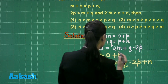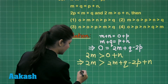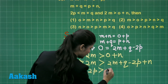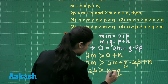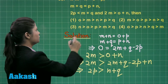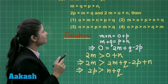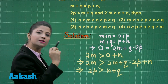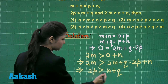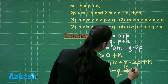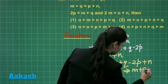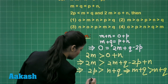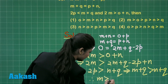Further simplifying, 2M gets cancelled and you obtain that 2P is greater than N plus Q. Since 2P is greater than N plus Q, and it is already given that 2P is less than M plus Q, this means M plus Q is greater than N plus Q. Q cancels out, and you obtain that M is greater than N.